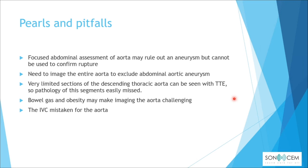Pearls and pitfalls: a focused abdominal aortic assessment may rule out an aneurysm but cannot confirm rupture. The entire aorta must be imaged to exclude AAA. Only very limited sections of the descending thoracic aorta can be seen with transthoracic echocardiography, so pathology of those segments can be easily missed. The IVC can be mistaken for the aorta; the previous differentiation criteria should help. Bowel gas and obesity may make imaging challenging — air is the enemy of ultrasound.